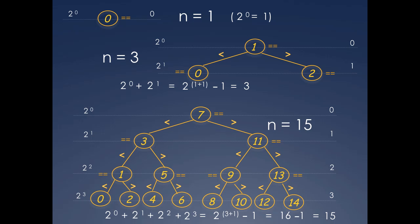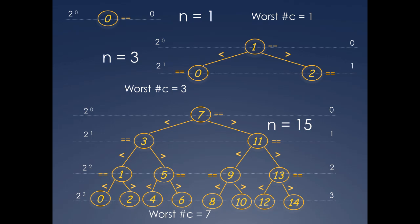Next, let's mark these trees with the worst case number of comparisons for success. For n equals 1, the worst case is 1. For n equals 3, the worst case is 3. For n is 7, which we have seen before, you may recall that the worst case is 5. And for n is 15, the worst case is 7.